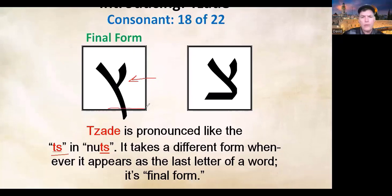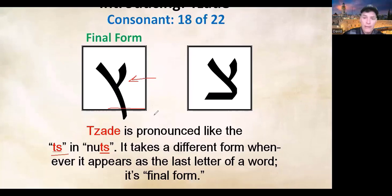Tsade sofit will look different — it's one of the handful of letters that will drop beneath the baseline. That can tip you off that you're dealing with a letter that has a final form. Most of the letters that have final forms dip below the baseline, though not in every single case — the mem does not. But the nun sofit, kaf sofit, pay sofit all drop below the baseline, and you can add tsade sofit to that collection.